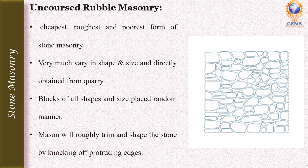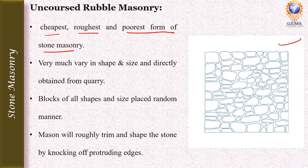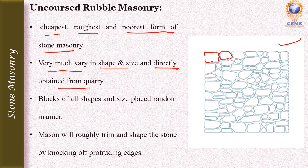The next topic is uncoursed rubble masonry, which is one type of rubble masonry. Uncoursed rubble masonry is the cheapest, roughest, and poorest form of stone masonry. As shown in the diagram, the stones are in different shapes and sizes — not uniform. The shapes and sizes of stones vary greatly, and stones are directly obtained from the quarry with no dressing done.